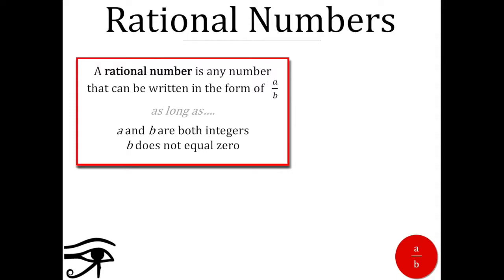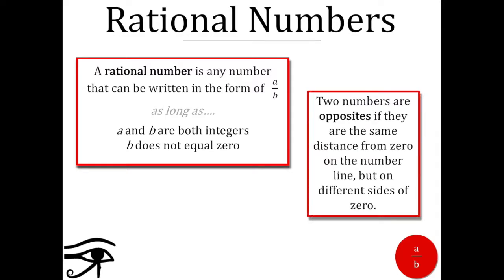Okay, what about opposites? Well, two numbers are opposites if they are the same distance from zero on the number line but on different sides of zero. And finally, absolute value: the absolute value of a number is its distance from zero on the number line.